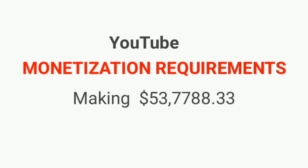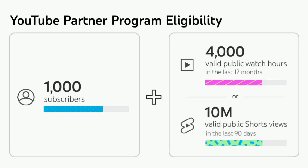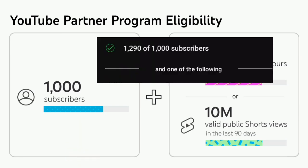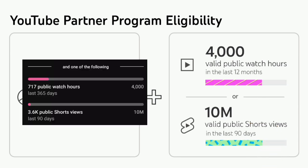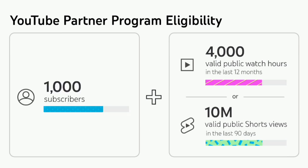Let's move to some of the requirements that you need before YouTube starts paying you. Monetization Requirements: To monetize your YouTube channel, you must meet the following requirements. First, 1,000 subscribers — your channel must have at least 1,000 subscribers. Second, 4,000 watch hours or 10 million views — your channel must have at least 4,000 watch hours in the past 12 months or 10 million views in the past 90 days.